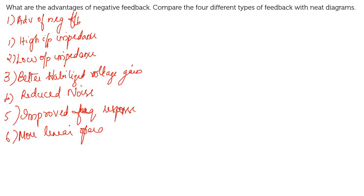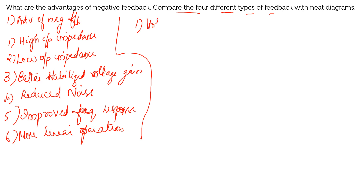So these are the points you can write as the answer for part A. Now moving on to the second part, that is compare the four different types of feedback. Based on the feedback connection and based on the parameters, whether it is voltage or current feedback, you can classify the feedback into four types.